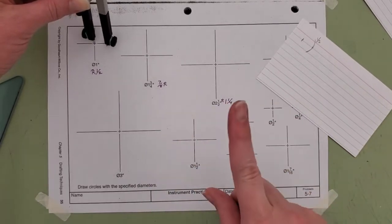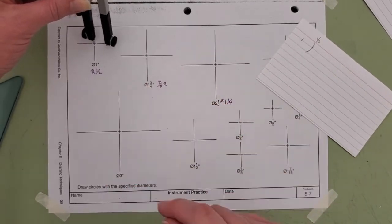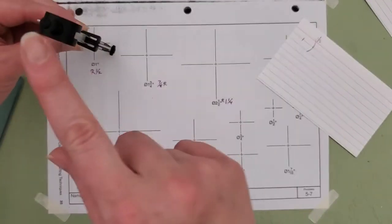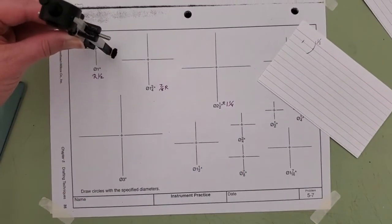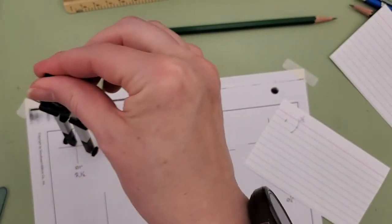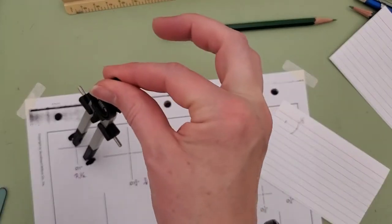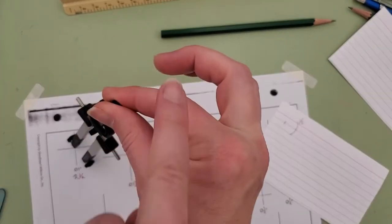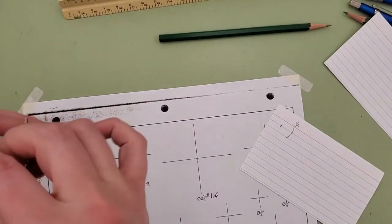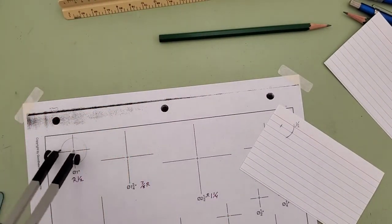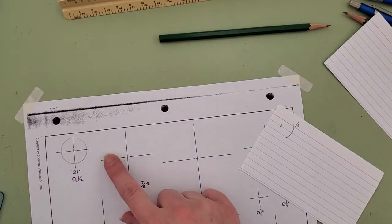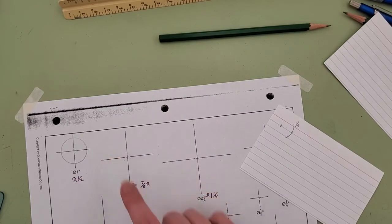One last trick: you should have your compass tilting while you twirl. This knob on top is meant for you to hold, and since I am going to twirl counterclockwise, I'm going to lean it in the direction that I am spinning. You will get a clean circle every single time.